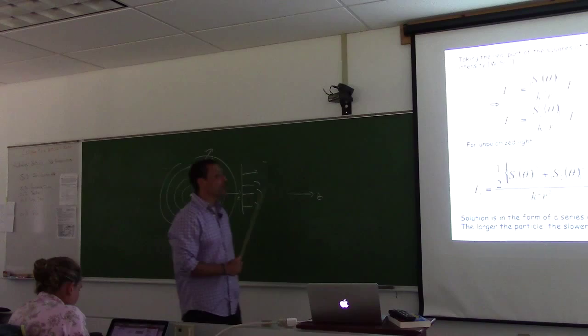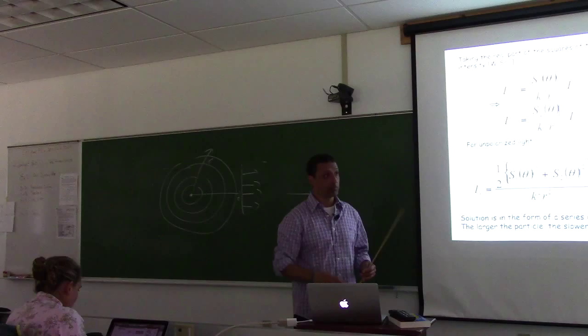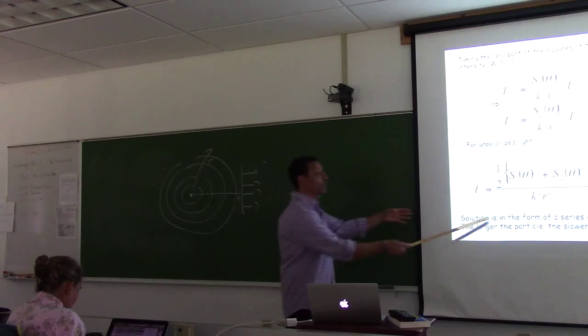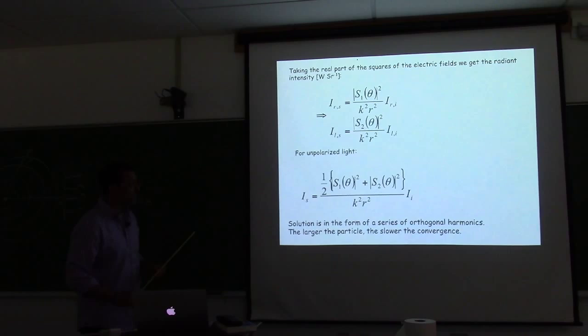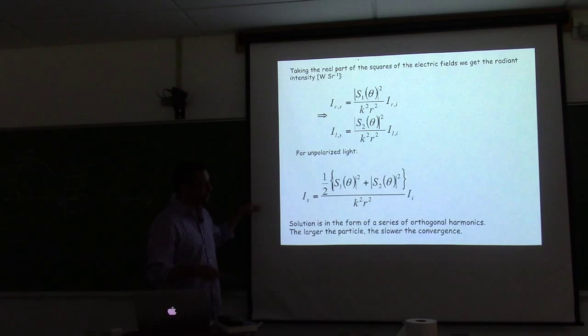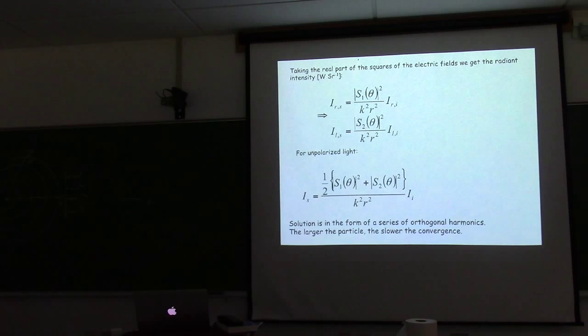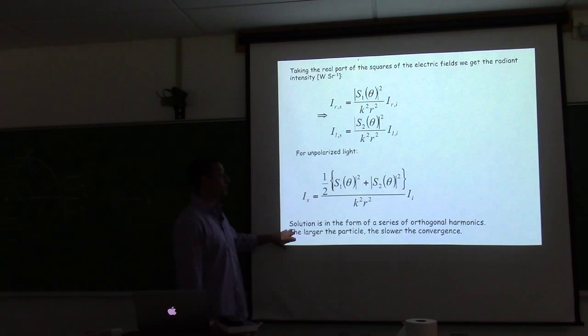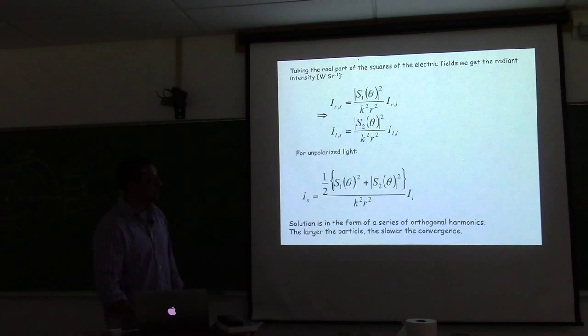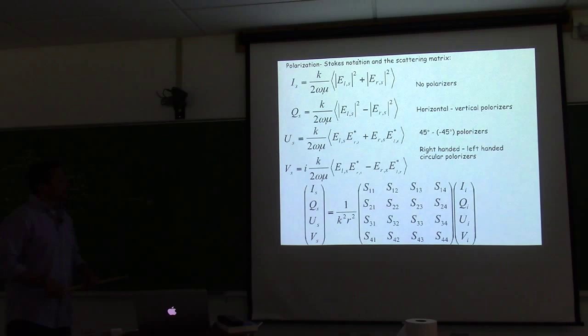The way you solve something like this is you come up with a series of polynomials. For some problems you decompose into sinusoids — like the tidal problem — but here we decompose into other waves that are symmetric in R with some component of Z. We sum the harmonics and force each order to obey the boundary condition. For a certain type of harmonic, the larger the particle, the slower the convergence. For a very tiny particle, the first harmonic does very well; but for a large particle relative to the wavelength, you may need 100 components in that series solution.